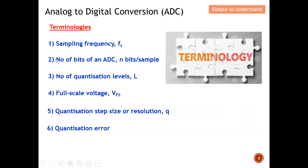I also described term number 2, number of bits, in the Part 1 series discussion. This number of bits determines the resolution — how good the resolution of the Analog to Digital Conversion is. Number 3 is the new terminology: what is the number of quantization levels? This quantization level is closely related to the number of bits, which I'm going to describe soon.